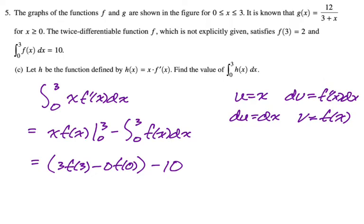All right, so now we just need to know what f of 3 is. f of 3 is given. It's 2. So it's 3 times 2. And then 0 and minus 10. So 6 minus 10, negative 4. That's the entire question. I hope this was helpful, and good luck.